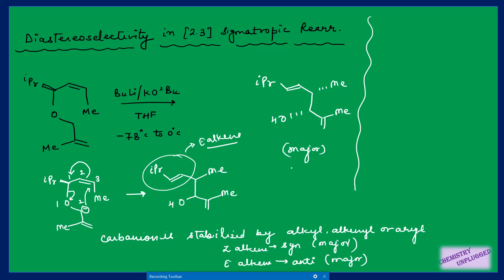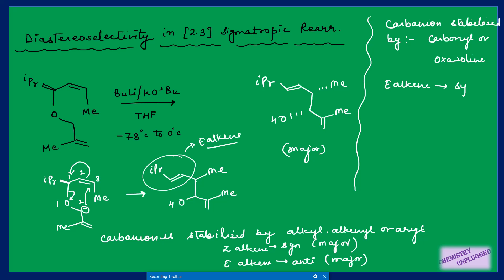If the carbanion is stabilized by a carbonyl group or an oxazoline ring, then the selectivity reverses: E-alkene gives syn as major product and Z-alkene gives anti as major product. This is exactly the reverse of the alkyl/aryl case. Just remember this rule and you can determine the product when the carbanion is stabilized by either type of group.